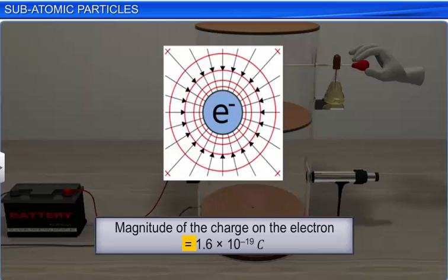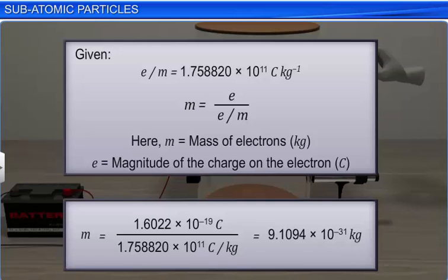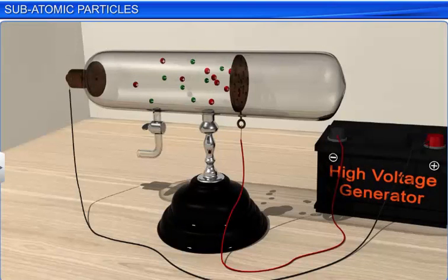Knowing the values of q and n, Millikan calculated the charge on an electron to be 1.6 × 10⁻¹⁹ coulombs. The mass of the electron was then determined by combining the results of Millikan's oil drop experiment and Thomson's value of the e/m ratio, and was found to be 9.1094 × 10⁻³¹ kg.